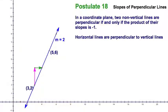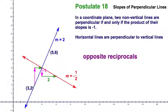m is equal to 2. Now I'm going to draw a line perpendicular. And this theorem tells us that I can see intuitively, instead of going up 2 over 1, down 1 over 2. And then I can see a slope of negative 1 half. See, that fits with our postulate here, where we're told that the slopes are opposite reciprocals.